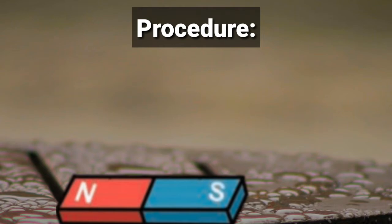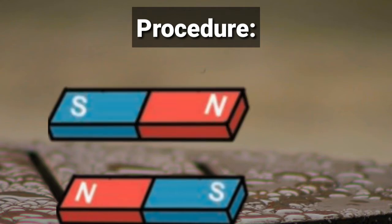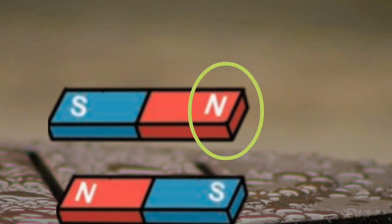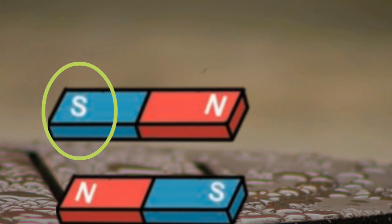Do you find any change in the direction of the suspended bar magnet? What is the change? The suspended bar magnet always comes to rest in the direction of the bar magnet placed on the table. The north pole of the suspended bar magnet points towards the south pole of the bar magnet on the table, and the south pole points towards the north pole of the bar magnet on the table.